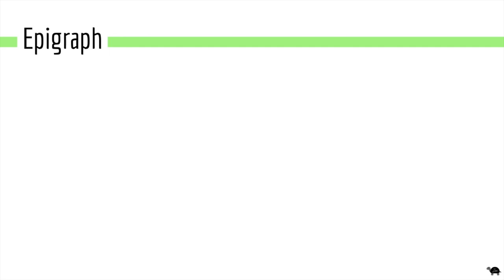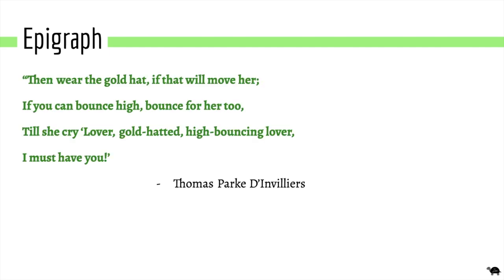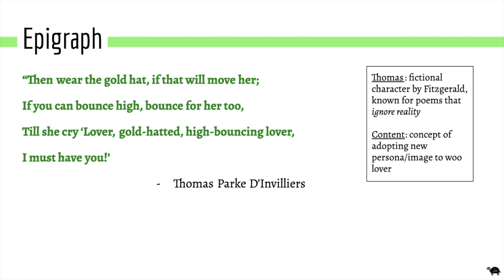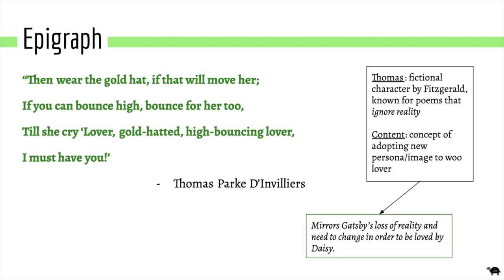The epigraph is also quite interesting to look at. It says: 'Then wear the gold hat, if that will move her. If you can bounce high, bounce for her too, till she cry lover, gold-hatted, high-bouncing lover, I must have you.' This is written by a fictional character that Fitzgerald created, known to write poems that ignore reality. The content expresses that one has to adapt a new persona to woo a lover — this is Gatsby to a T. James Gats puts on the image of Jay Gatsby, loses touch with reality, and inevitably fails. You can see simply from the epigraph that class is a huge theme integral to the novel.